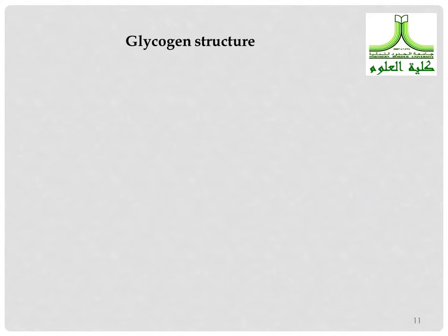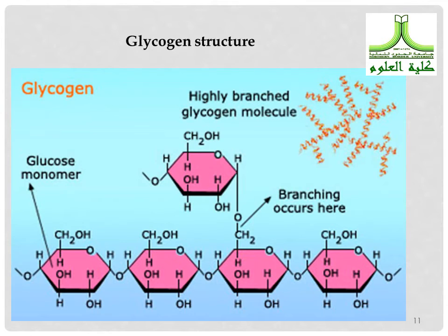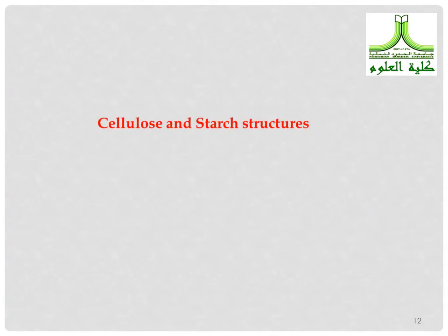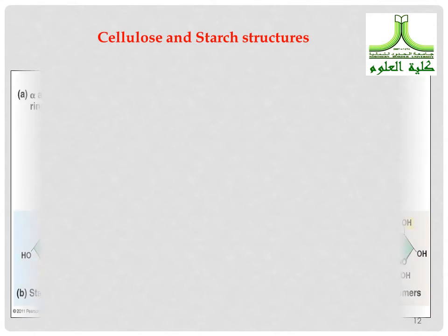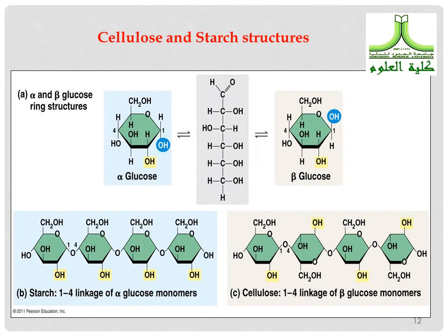Glycogen is structured from the glucose monomer. Cellulose and starch also have related structures — from beta-glucose for cellulose and alpha-glucose for starch.